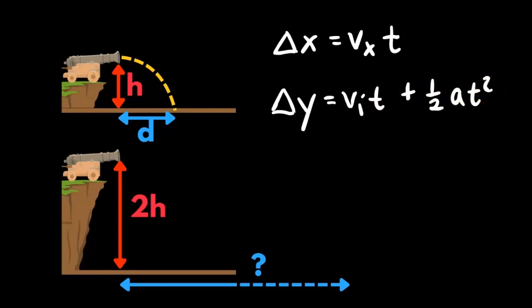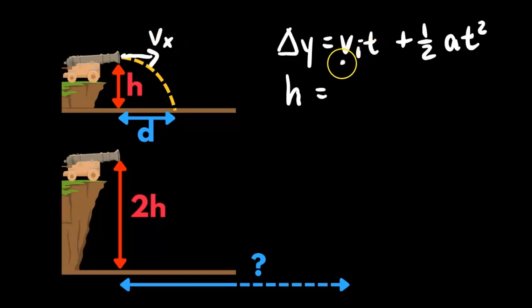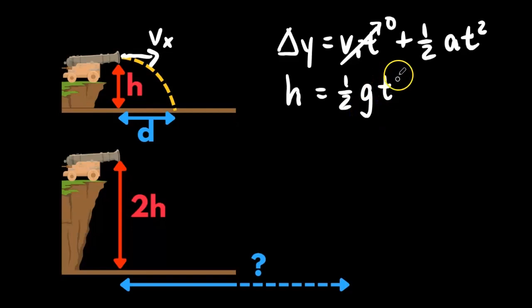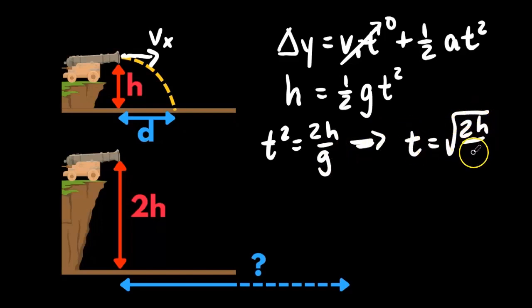We're going to start with the vertical motion and come up with the relationship between the height and the time that it's falling. For delta y, the vertical displacement, we're going to use H. The initial velocity is 0 because it's only moving horizontally initially, so vi is 0 and that whole term drops out. We have H equals one-half g·t squared. Solving for t: t squared equals 2H over g, and taking the square root gives t equals the square root of 2H over g.